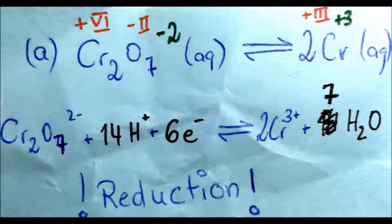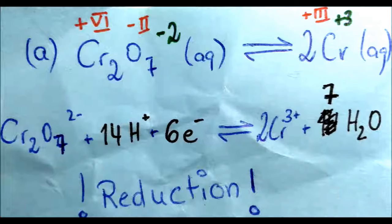Our first example is dichromate reacting to chromium. We look at the oxidation state of dichromate: oxygen is minus two, and we have seven oxygens giving minus fourteen. With a charge of minus two on the ion, we get plus twelve for the two chromium atoms combined, giving each chromium an oxidation state of plus six. Going from plus six to plus three is a difference of three electrons per chromium, so we take six electrons total to convert dichromate to two chromium ions. This is a reduction.